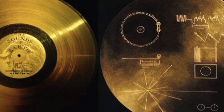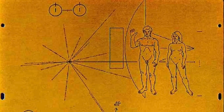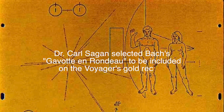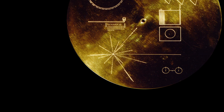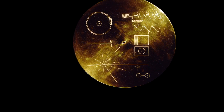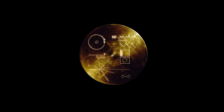In 1977, NASA made a 12-inch gold-plated copper disc containing sounds and images that they thought portrayed the diversity of life and culture on Earth. Now we will play a little bit of what was on the record. As the Secretary General of the United Nations, I send greetings on behalf of the people of our planet.